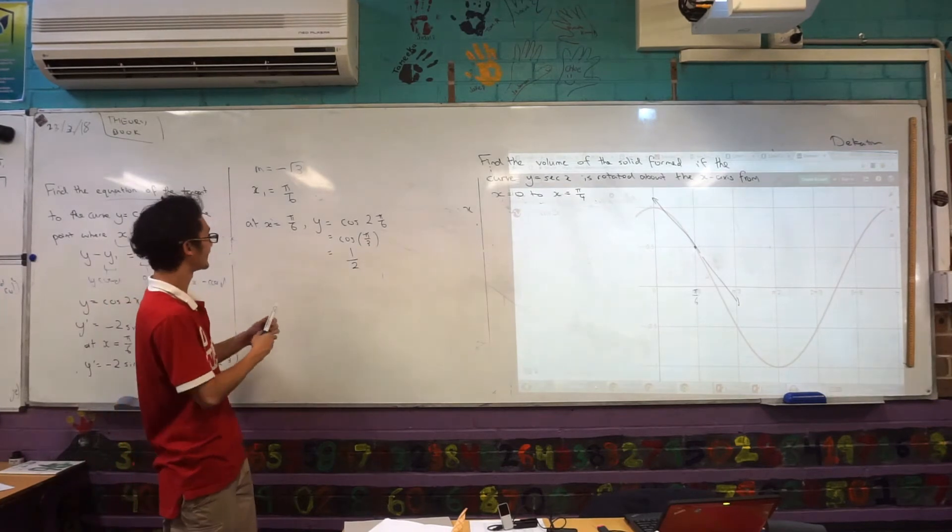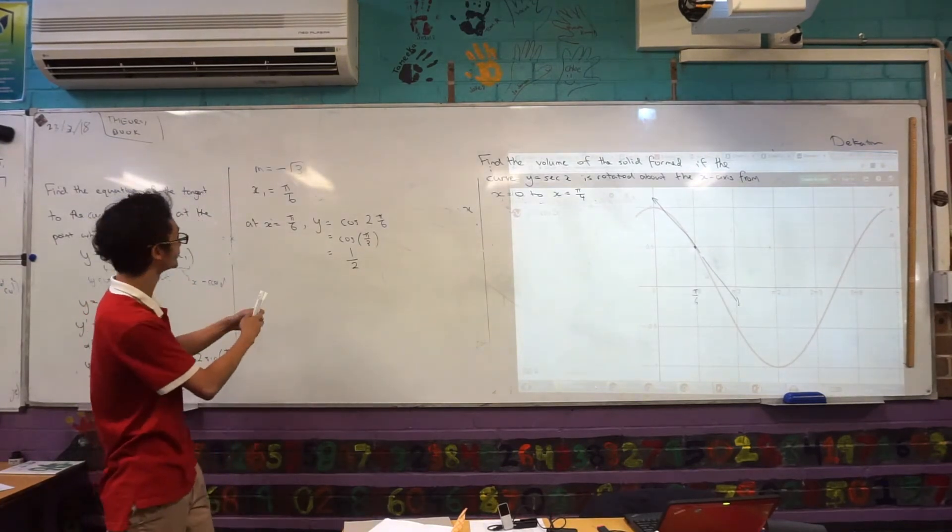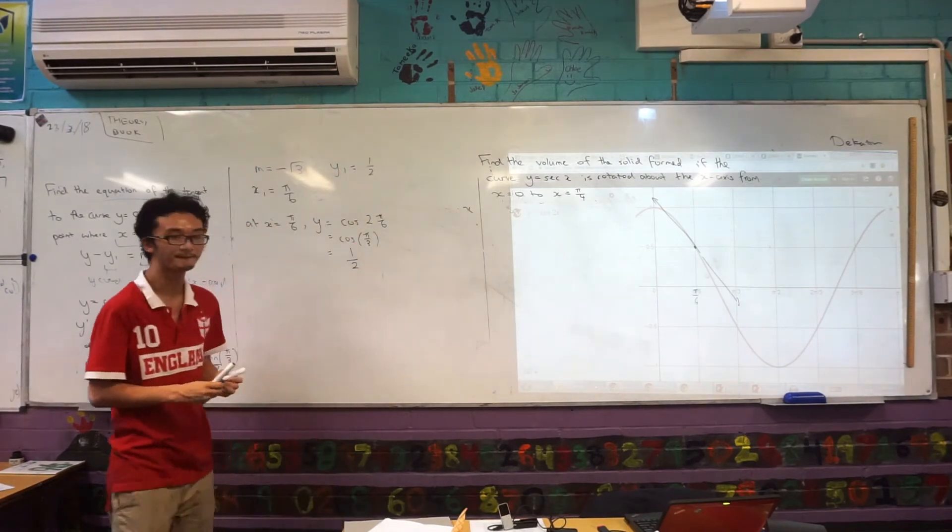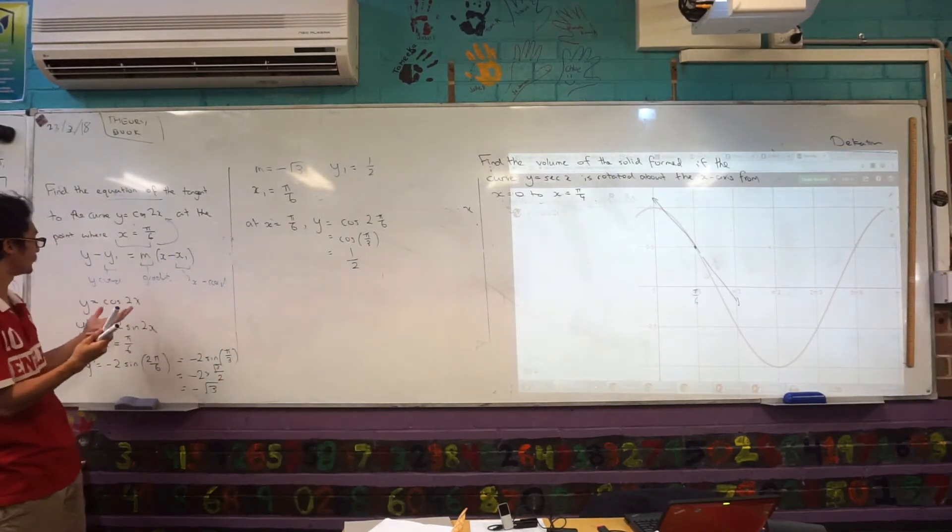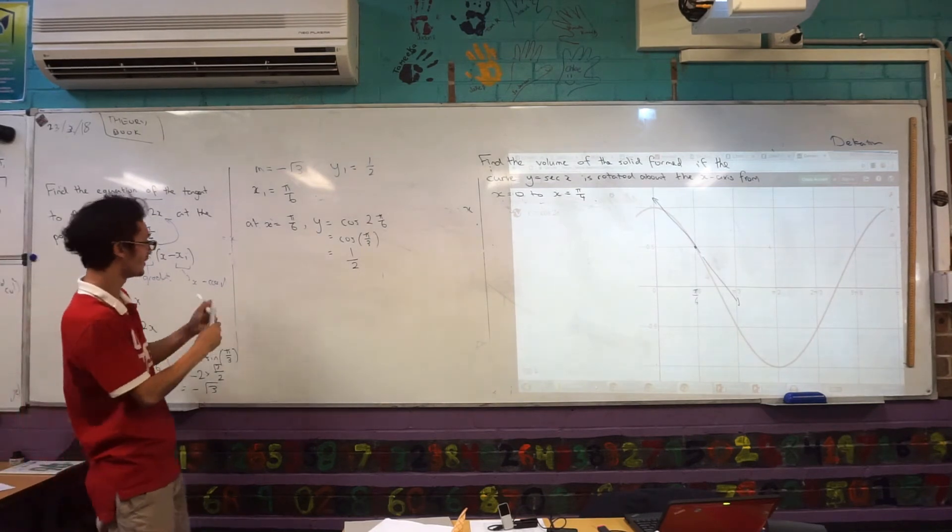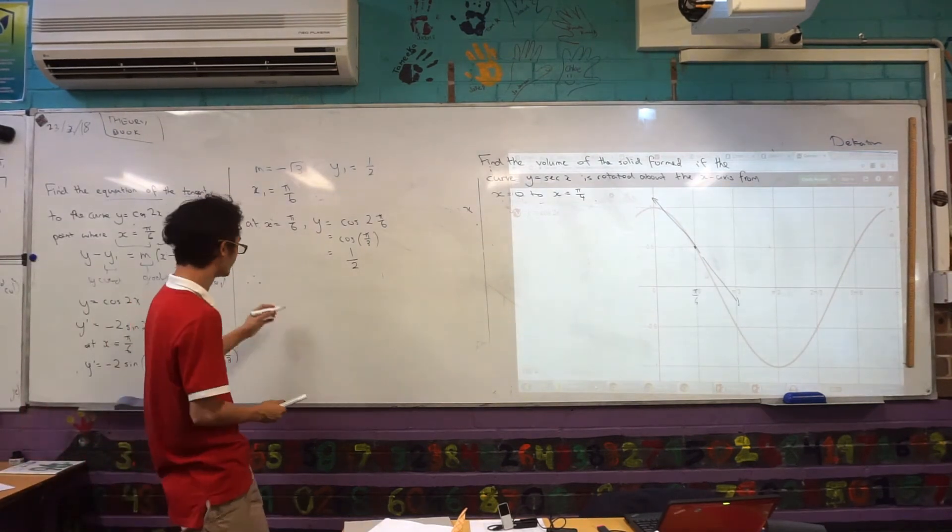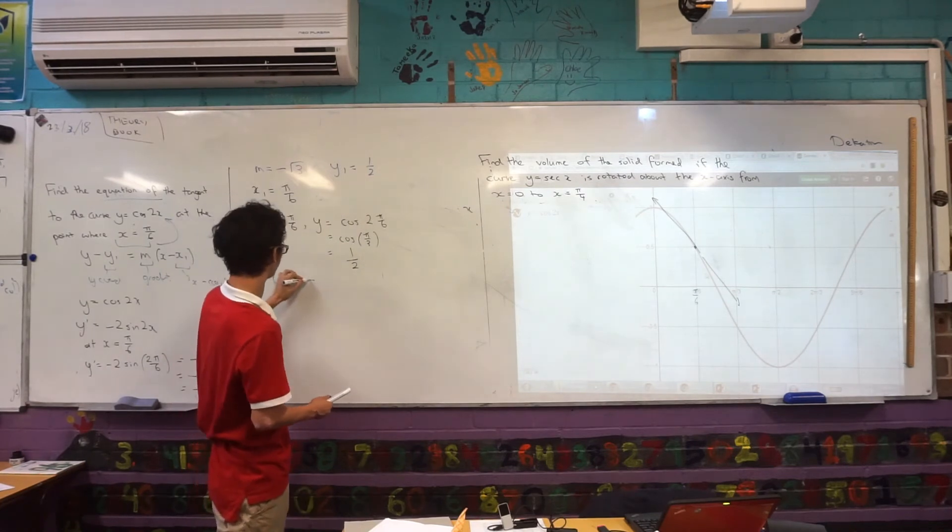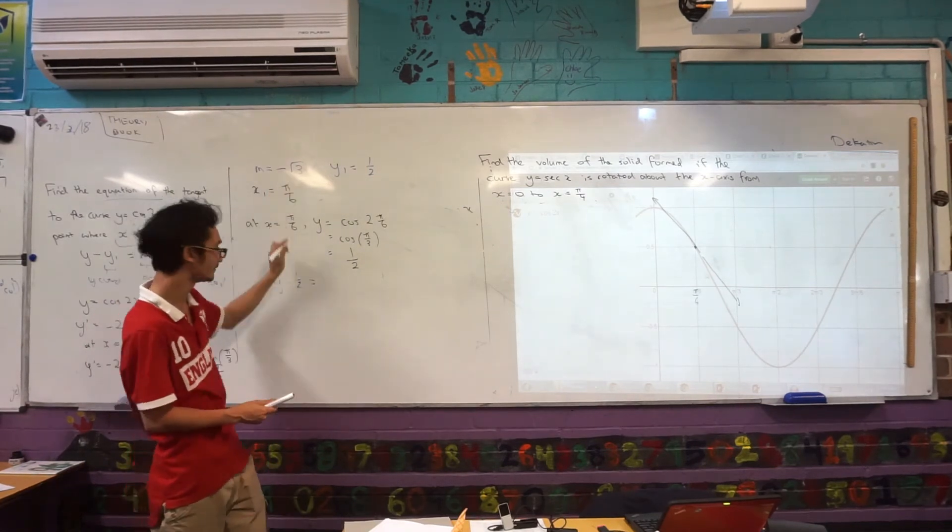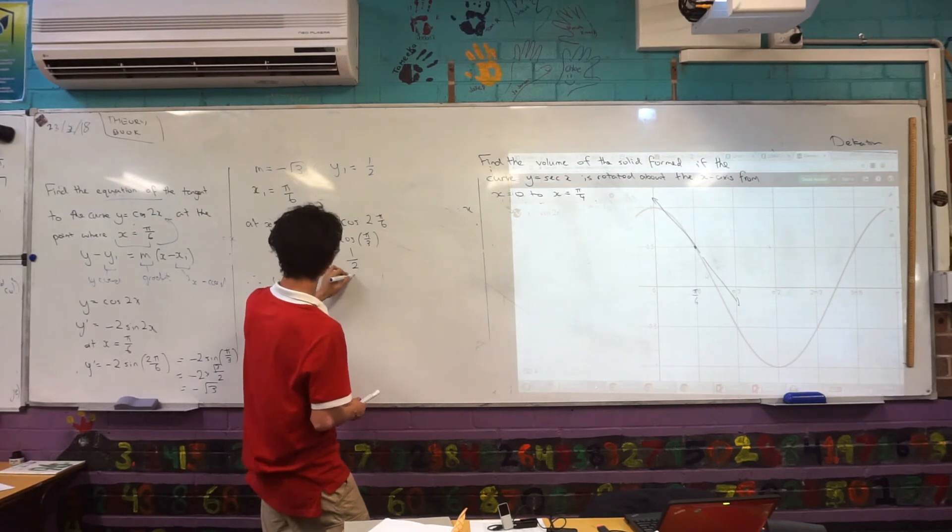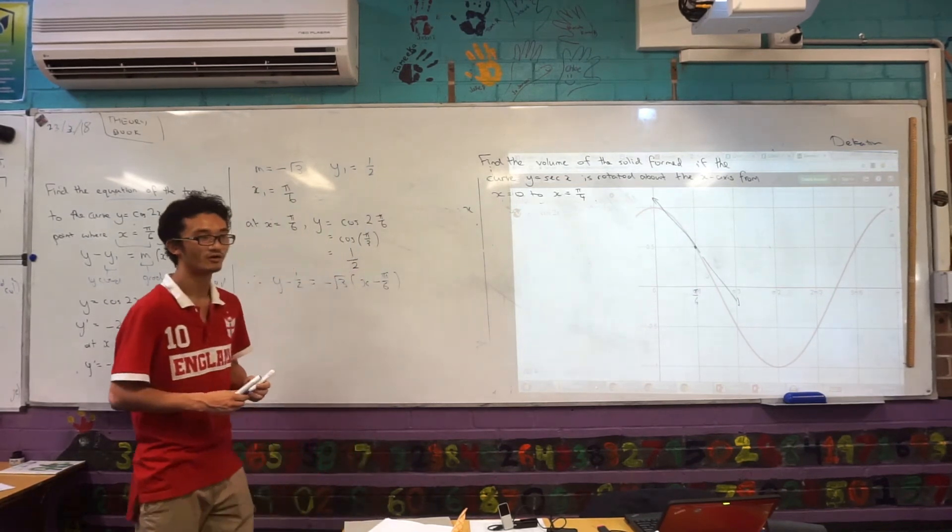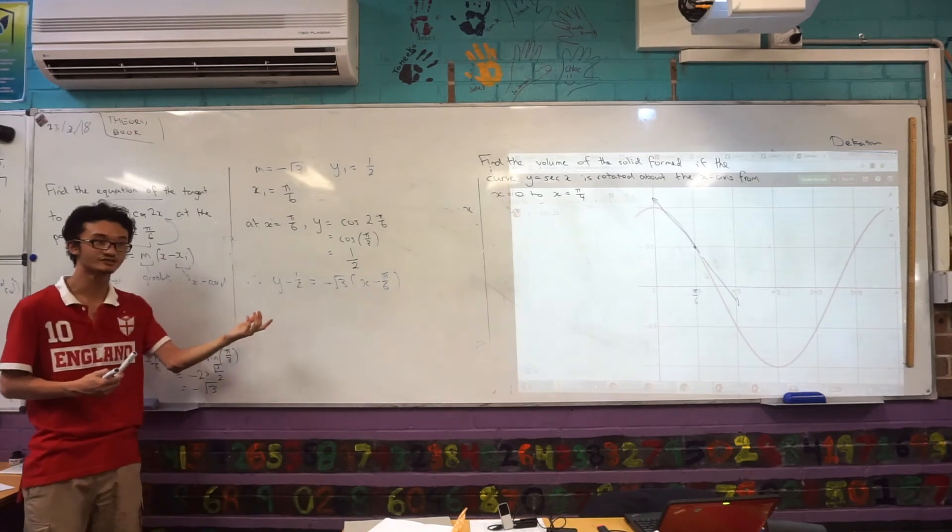After all that, that's actually my y1 value. So I'll say up here, y1 is equal to a half. Okay, and then now I have all the pieces, I can just put them together. Therefore, my equation of the tangent is y minus y1, which is just a half, which is equal to m, my gradient, minus root 3 outside of x minus π/6. Now, can I just leave my answer like this?